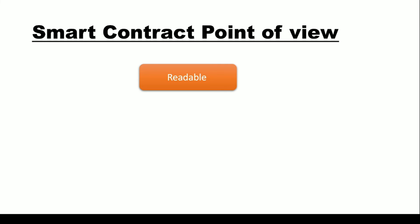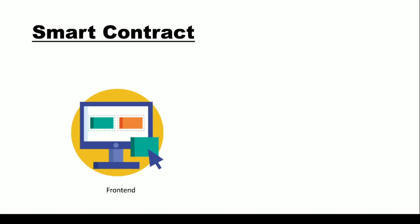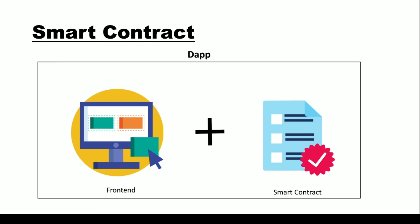Now let's discuss some best practices to keep in mind when creating a smart contract. First, always create readable smart contracts. Do not try to make your smart contract complicated. Since once it is deployed you cannot change it, if your team members cannot understand your smart contract they will make mistakes, leading to huge losses. If you are creating a decentralized application — which is a front-end integrated with your smart contract — and your smart contract is not readable, the integration will not be proper and the application can be easily hacked.